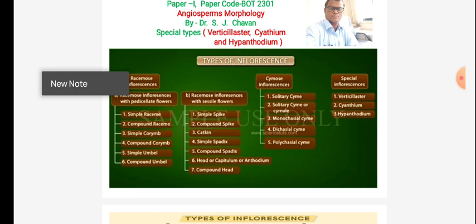Simple means without branching and compound means with branching. For cymose inflorescence, we have seen the solitary type — single terminal and axillary. A good example for terminal is Datura, and axillary is Hibiscus. The monochasial types include helicoid and scorpioid, and there is also dichasial cymose and polychasial.